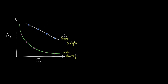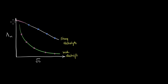In one of the earlier videos, we discussed how to find the limiting molar conductivity — or the molar conductivity at infinite dilution — for a strong electrolyte. What we did was extrapolate this curve to the point where it cuts the y-axis. If we extend this line, it intersects the y-axis at a specific point, and that value is the limiting molar conductivity at infinite dilution for the strong electrolyte.